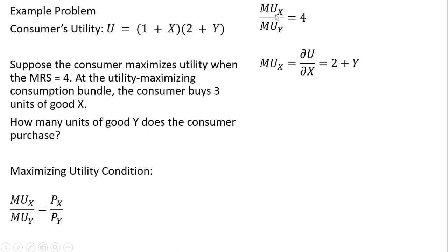And so what we need now is to get the marginal utility of good X. So to get the marginal utility of good X, we're going to take the partial derivative of the utility function with respect to good X, and we get back 2 plus Y. The partial derivative of X here is 1, and this 1 then is being multiplied by 2 plus Y. So that's how we get this result.